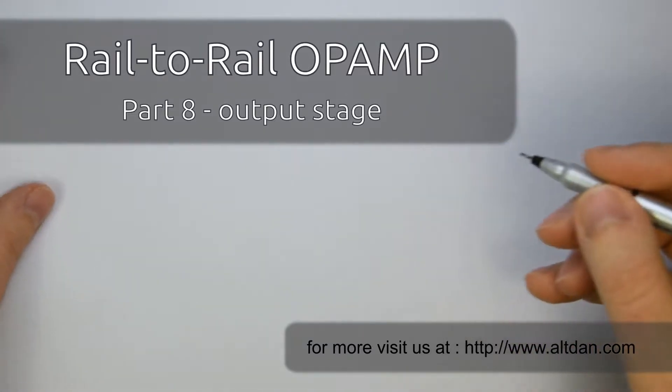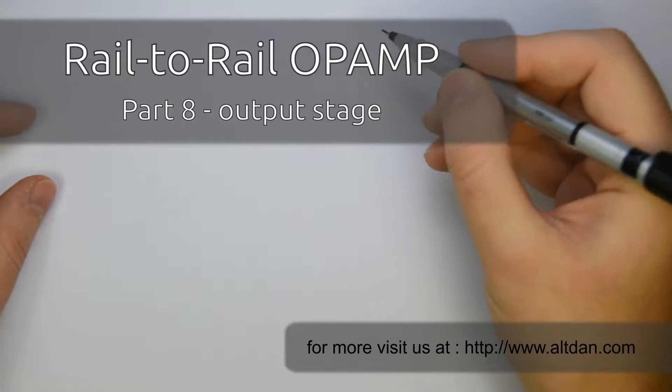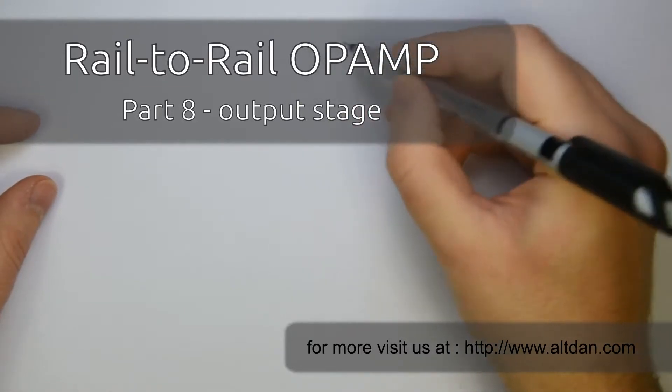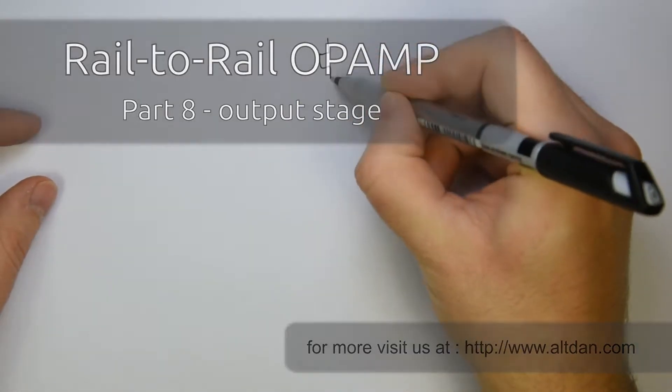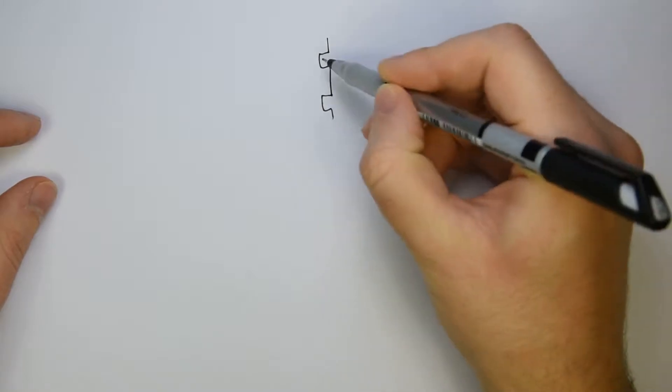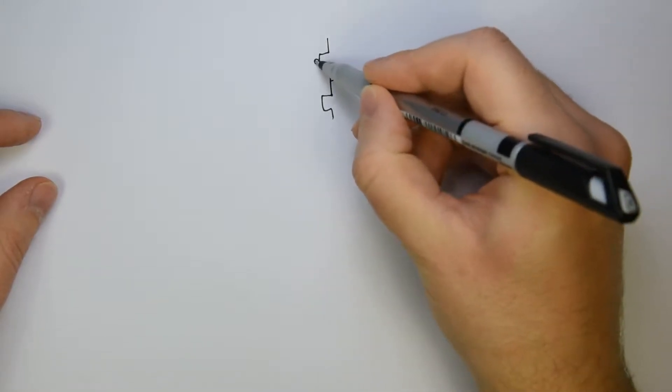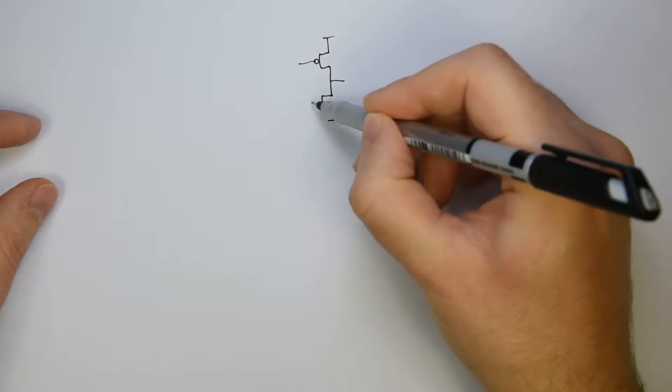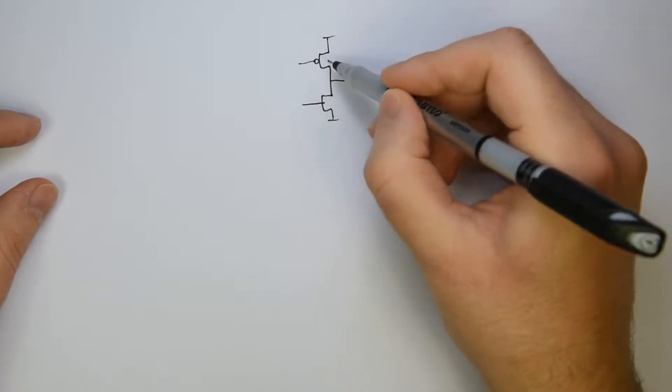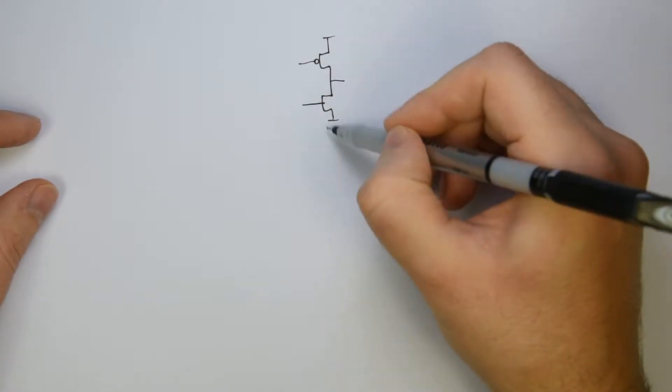Let's look now at the output stage. In the initial lesson I said that I want to have a Class B type of output stage, which means I want to have a full rail-to-rail output, and this translates to an output stage something like this.